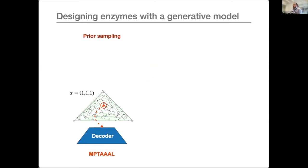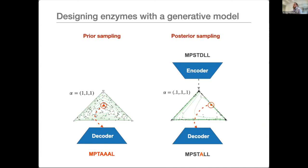We have two design strategies. Prior sampling generates a random number from the Dirichlet prior, runs it through the decoder, and outputs a sequence resembling proteins seen in training — useful for novel design. Posterior sampling starts with a wild-type sequence, runs it through the encoder to get the region of design space containing this protein, then samples a nearby value to decode — generating a sequence very similar to the wild type but with a few mutations.